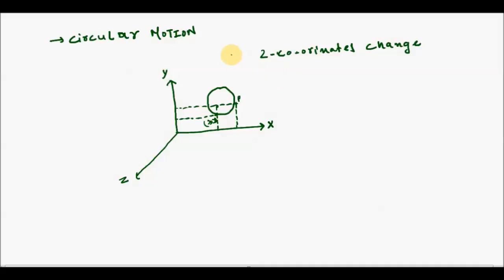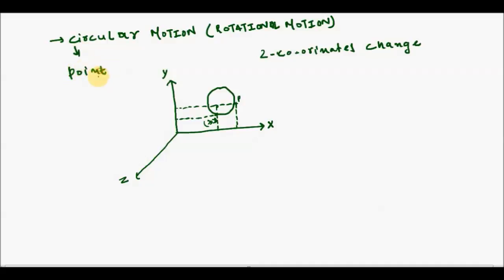A term closely related to circular motion is rotational motion. They share the same definition, but circular motion is defined for a point object, while rotational motion is defined for a body or a system.